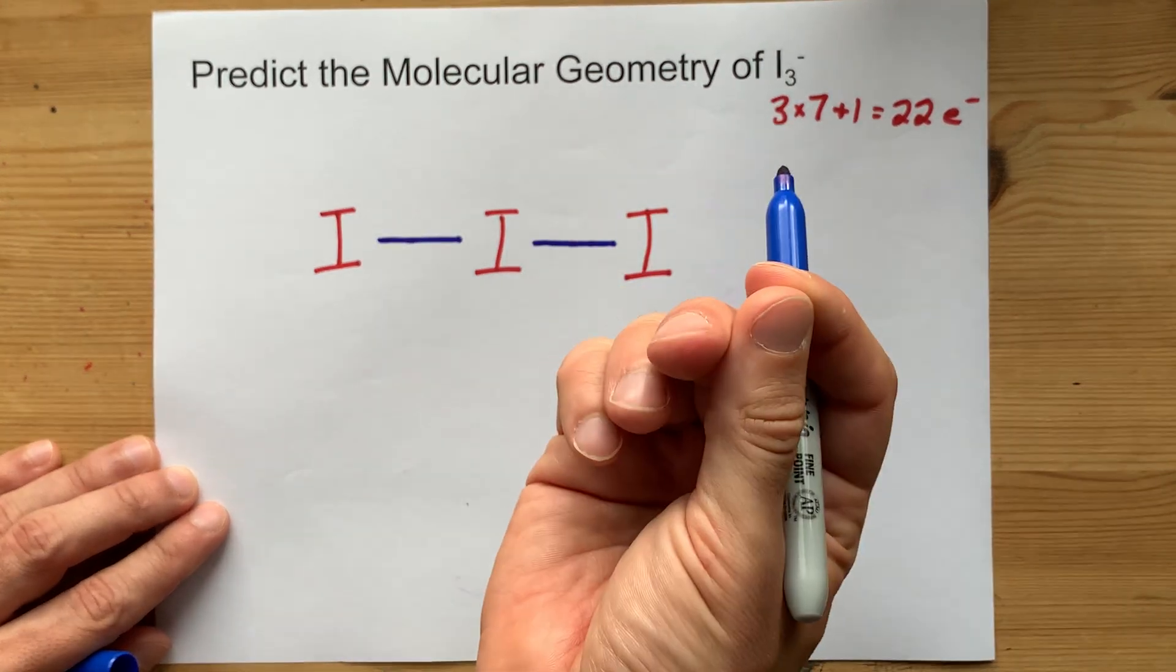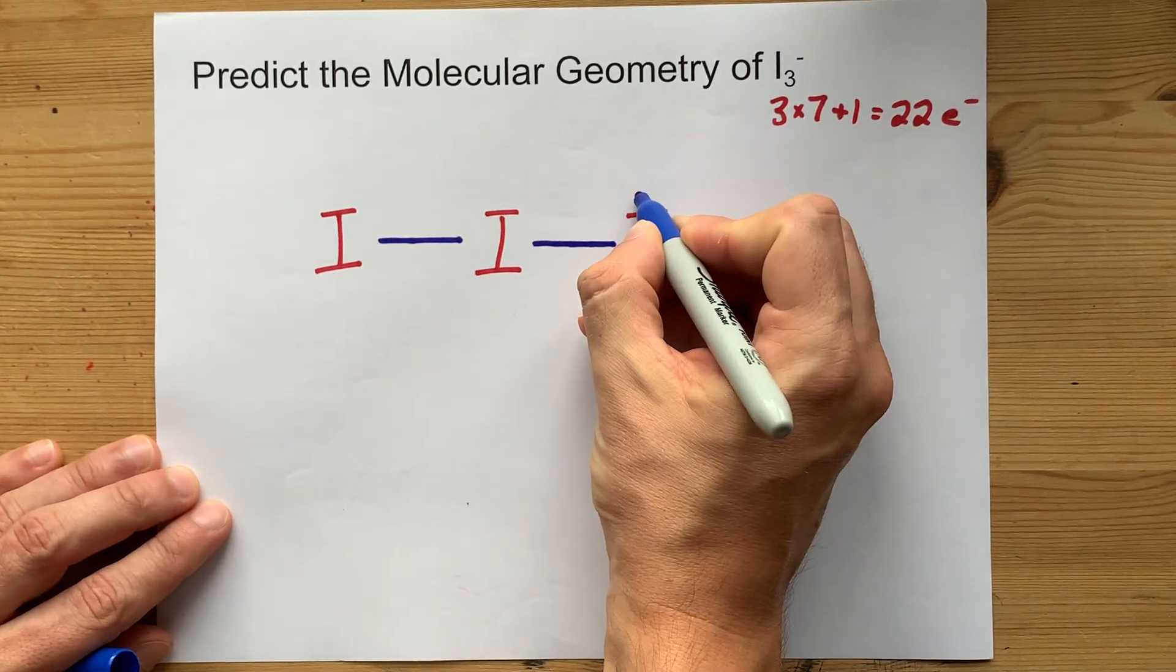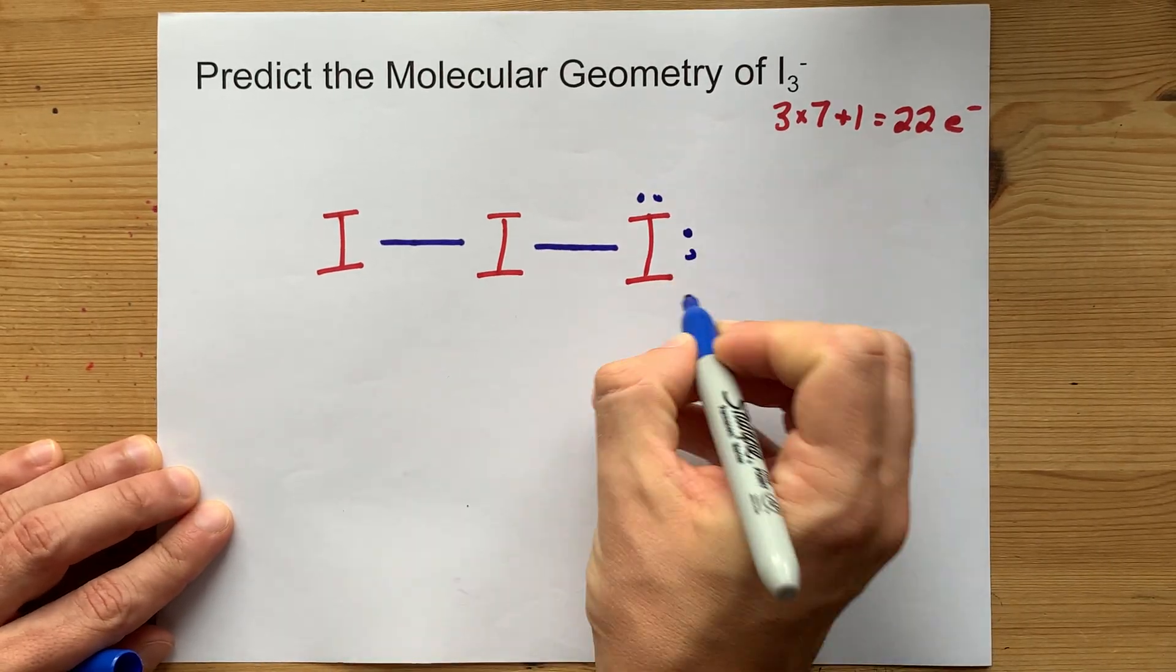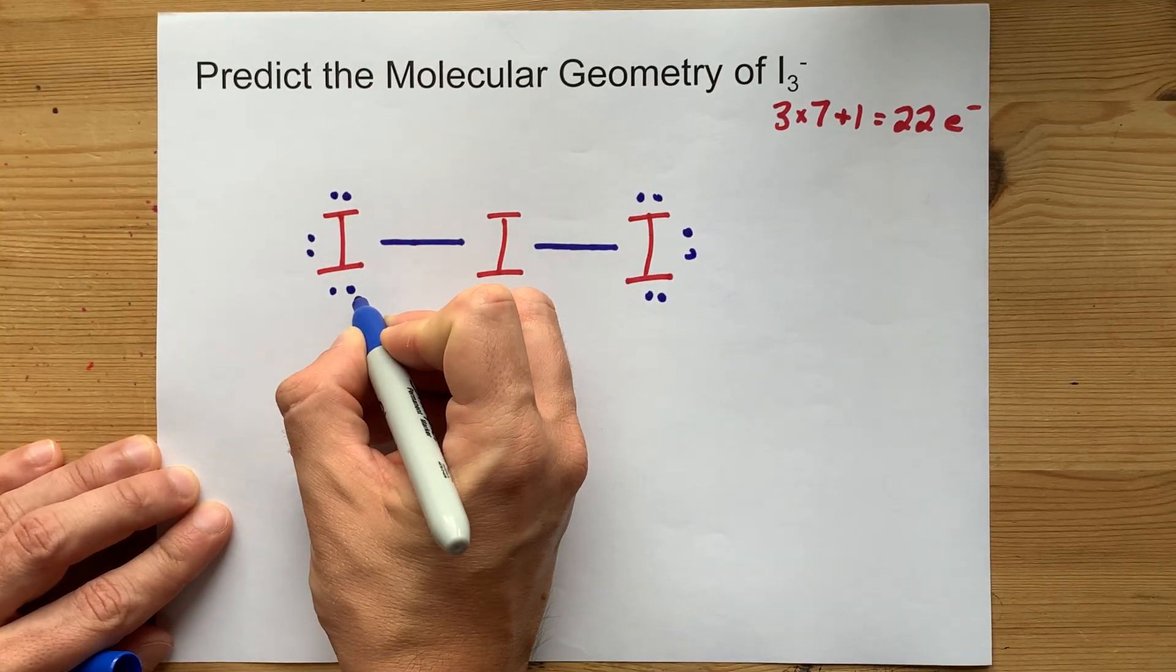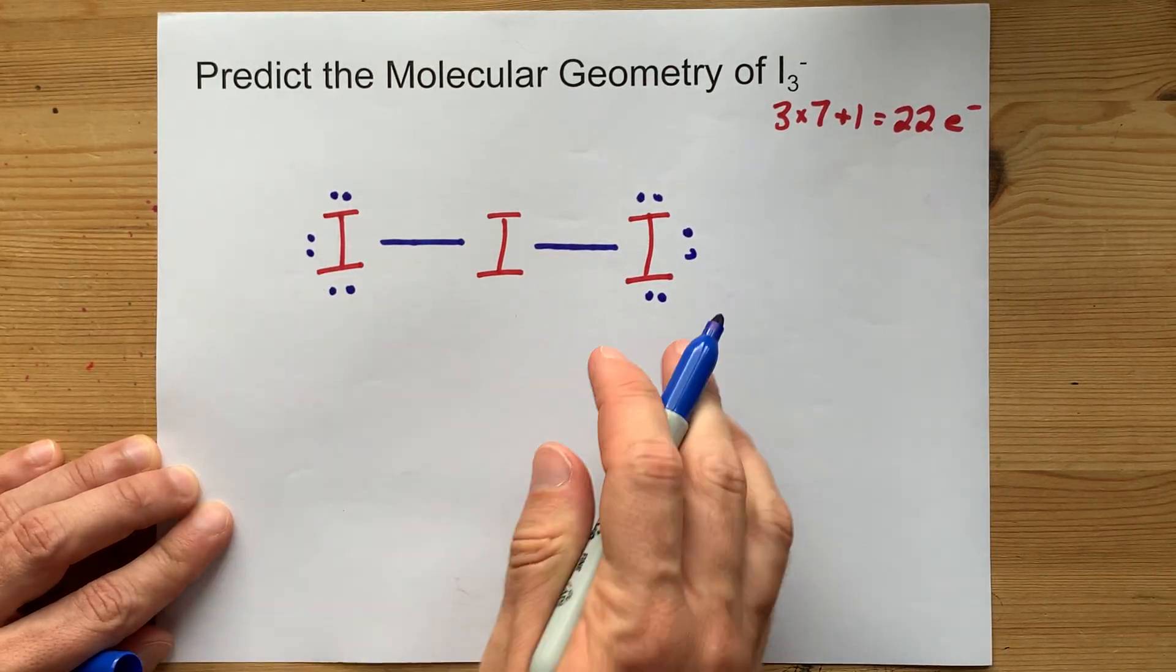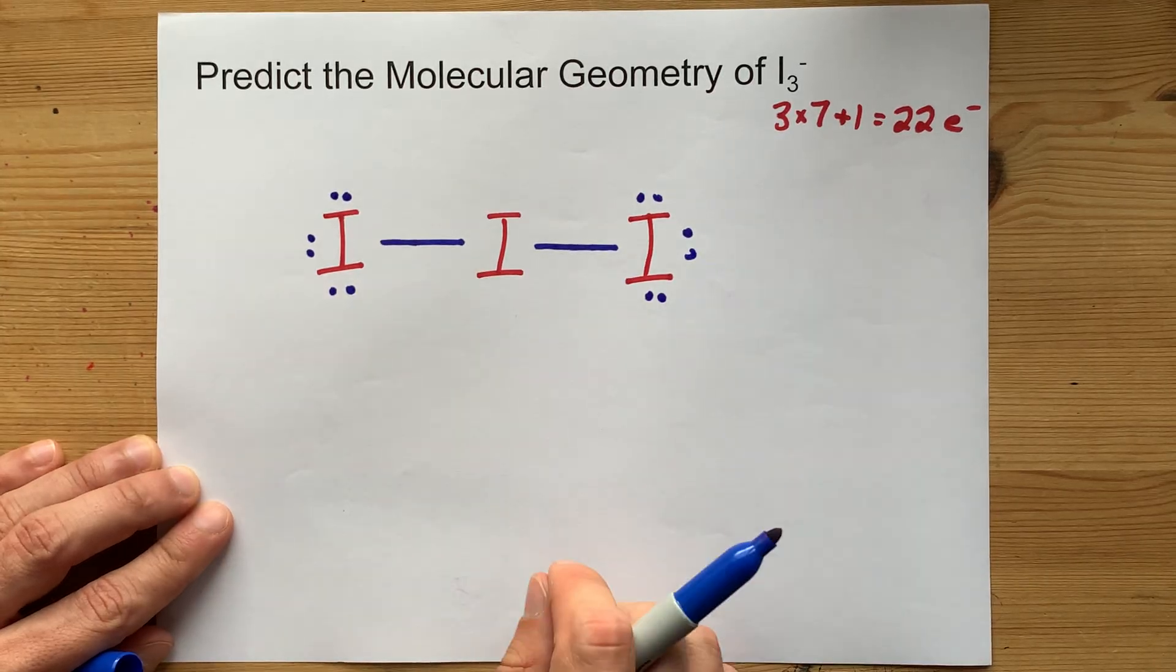Then I fill out the octet of my outer atoms. That's 5, 6, 7, 8, 9, 10, 11, 12, 13, 14, 15, 16. That's ensuring all the outer atoms have eight valence electrons.